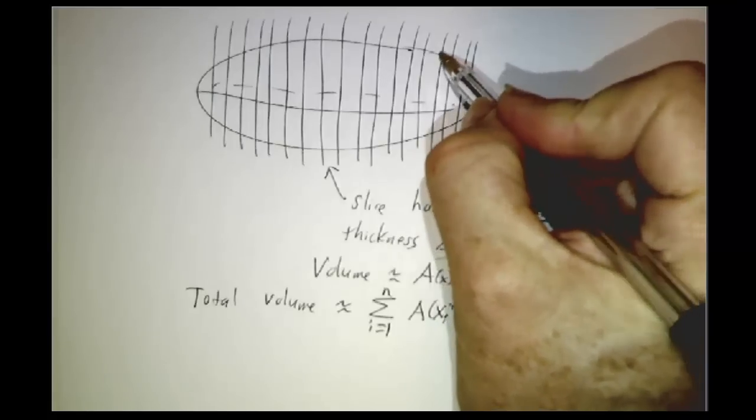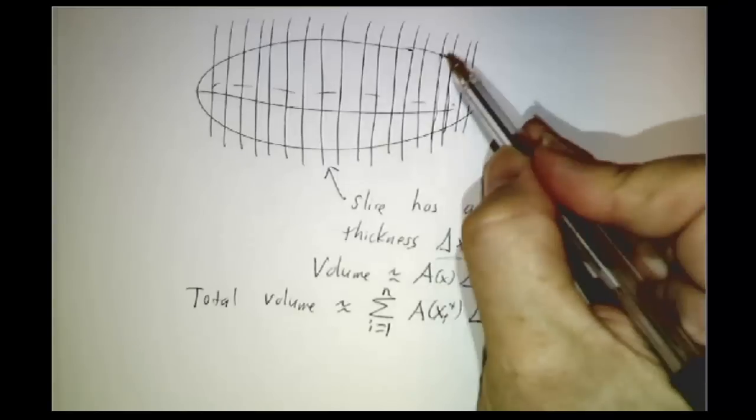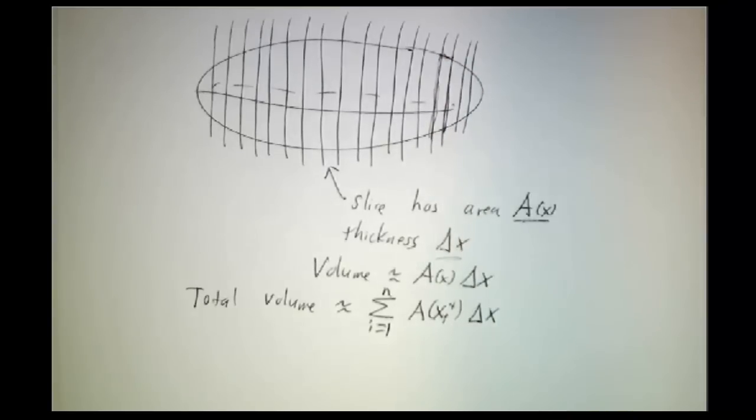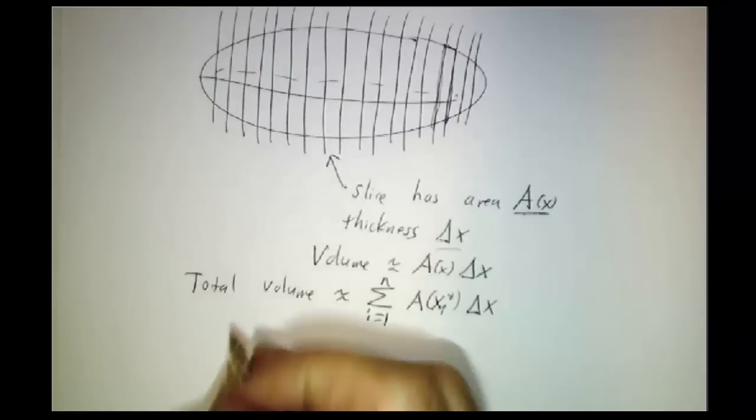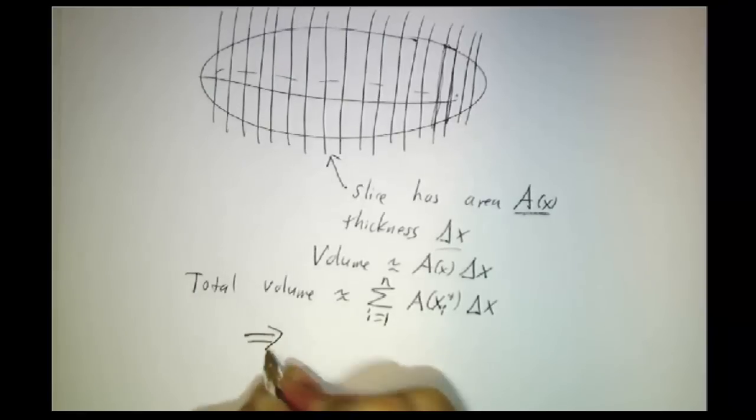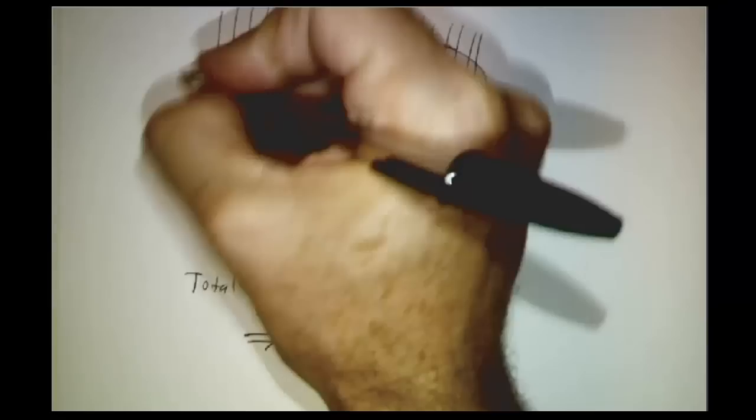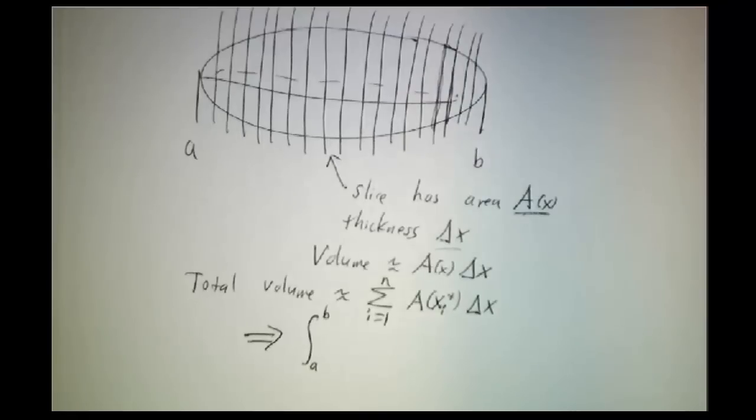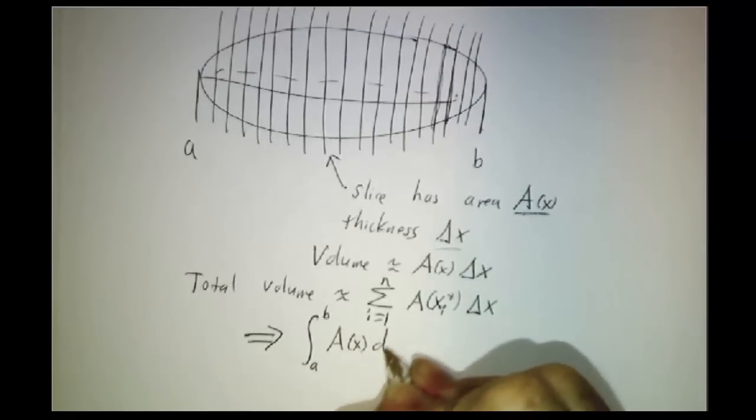it's a little bit thicker at this end than it is at this end. It has a little more area at this end than this end. So our volume estimates are a little bit off, but the thinner you slice, the better they get. And so in the limit, this becomes the integral from A to B. This is A. This is B of the area dx.